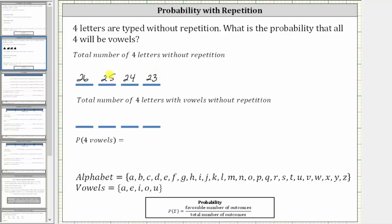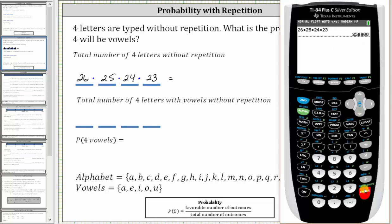The number of ways of typing four letters without repetition is equal to 26 × 25 × 24 × 23, which equals 358,800.